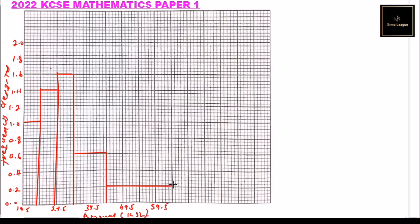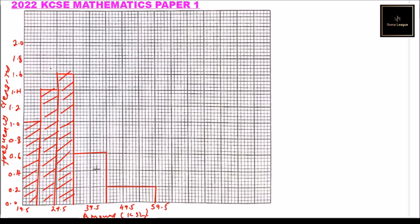The fourth bar has a frequency density of 0.6, and the fifth bar is 0.2, extending to 59.5. We then shade each bar of the histogram to complete it. That is the histogram required to represent the given data.